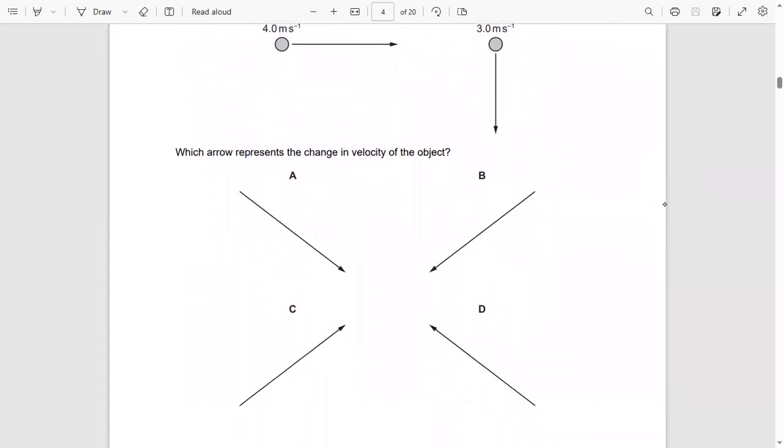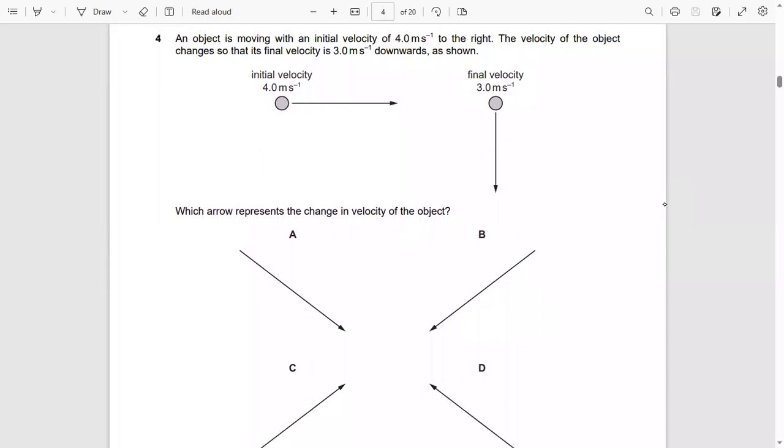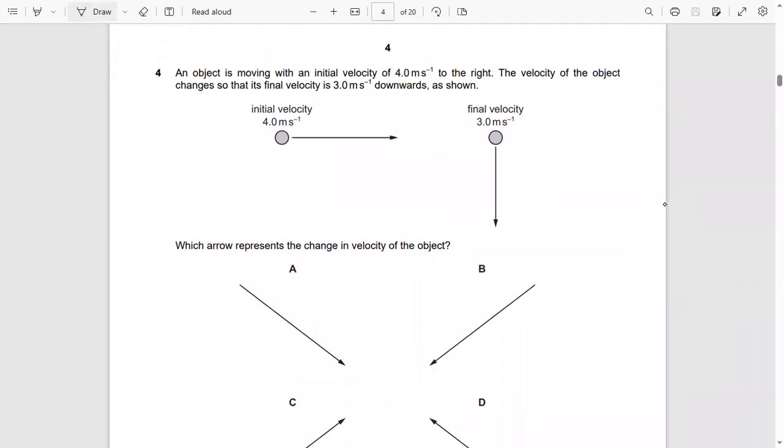These are the options we have: A, B, C, and D. The trick to solving this question is that it's not straightforward. You see, this U is the initial velocity, which is 4 meters per second. But this final velocity is not the change in velocity; it is in fact the resultant velocity.